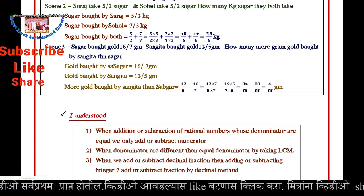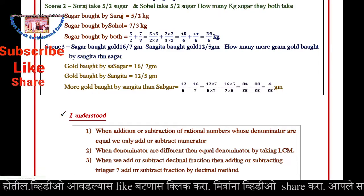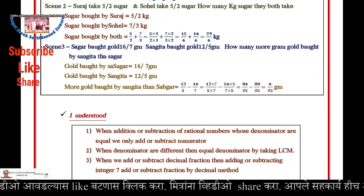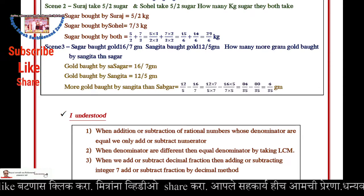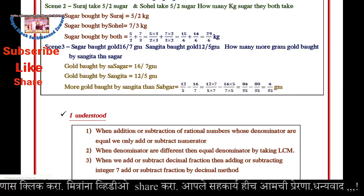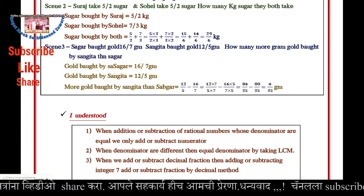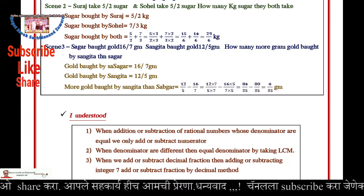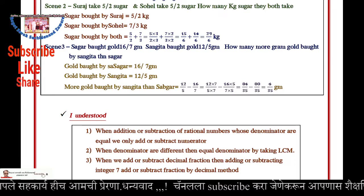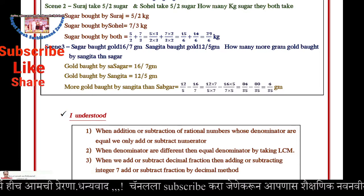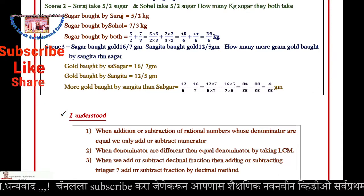Problem 3: Gold bought by Sagar is 16/7 grams. Gold bought by Sangeeta is 12/5 grams. How much more gold did Sangeeta buy than Sagar? That is equal to 12/5 minus 16/7. Since the denominators are different, we make the denominators the same.